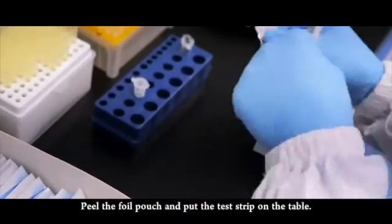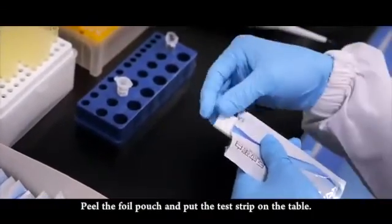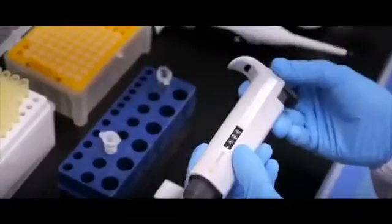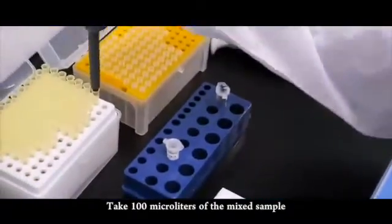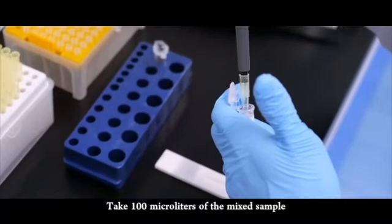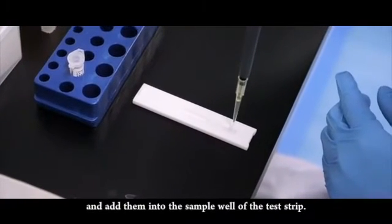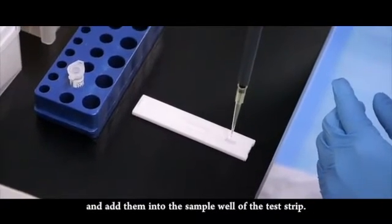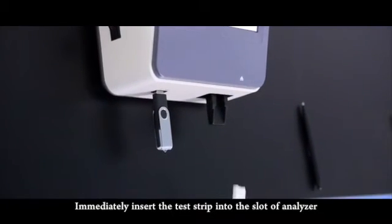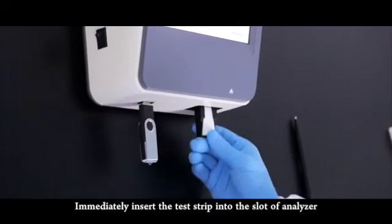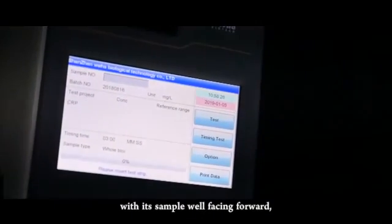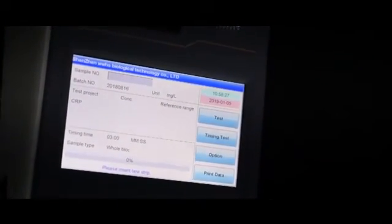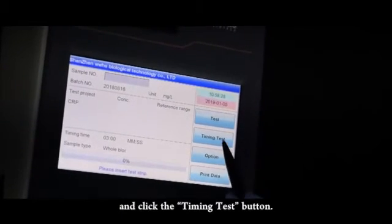Peel the foil pouch and put the test strip on the table. Take 100 microliters of the mixed sample and add them into the sample well of the test strip. Immediately insert the strip into the slot of analyzer with its sample well facing forward and click the timing test button.